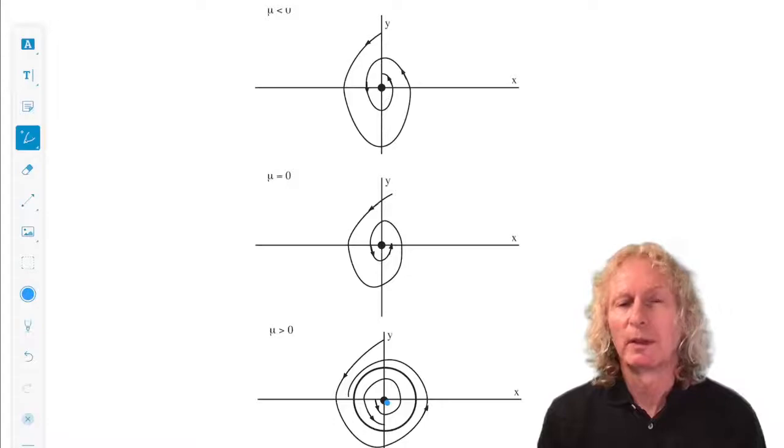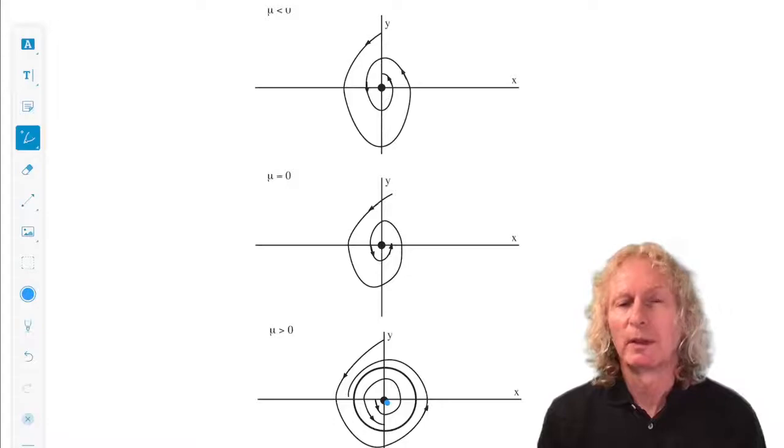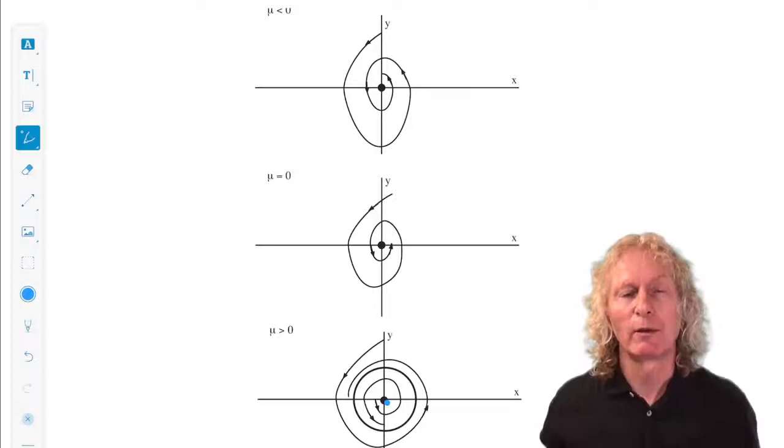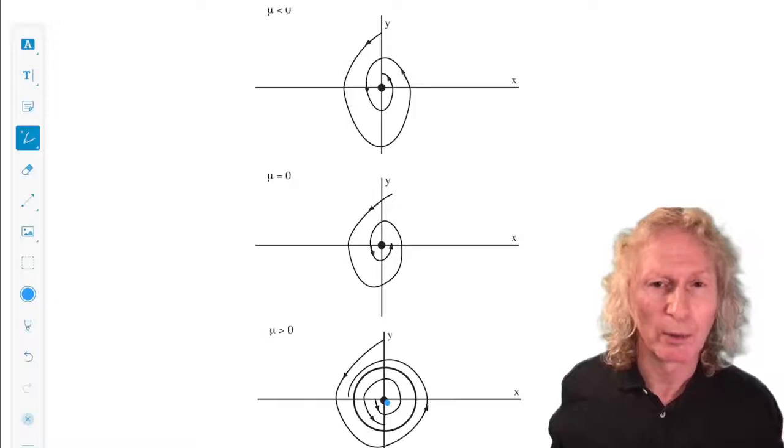So this is a particular example, but this phenomenon is a general phenomenon, and it's the content of the Hopf bifurcation theorem. If you have an equilibrium point, this can be done in arbitrary dimensions. I'll mention that when we get to the center manifold theory in the next chapter.